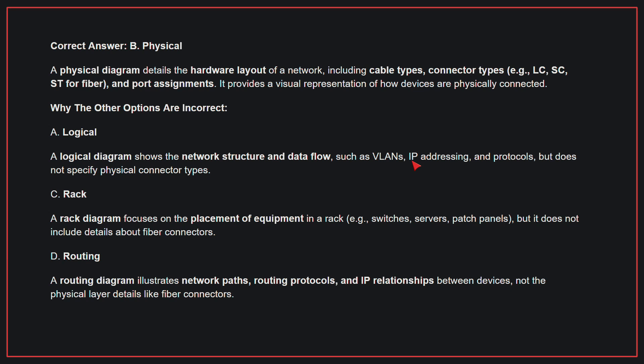Why the other options are incorrect? A, Logical: A logical diagram shows the network structure and data flow, such as VLANs, IP addressing, and protocols, but does not specify physical connector types. C, Rack: A rack diagram focuses on the placement of equipment in a rack, but it does not include details about fiber connectors. D, Routing: A routing diagram illustrates network paths, routing protocols, and IP relationships between devices, not physical layer details like fiber connectors. Therefore, the correct answer is B, Physical.